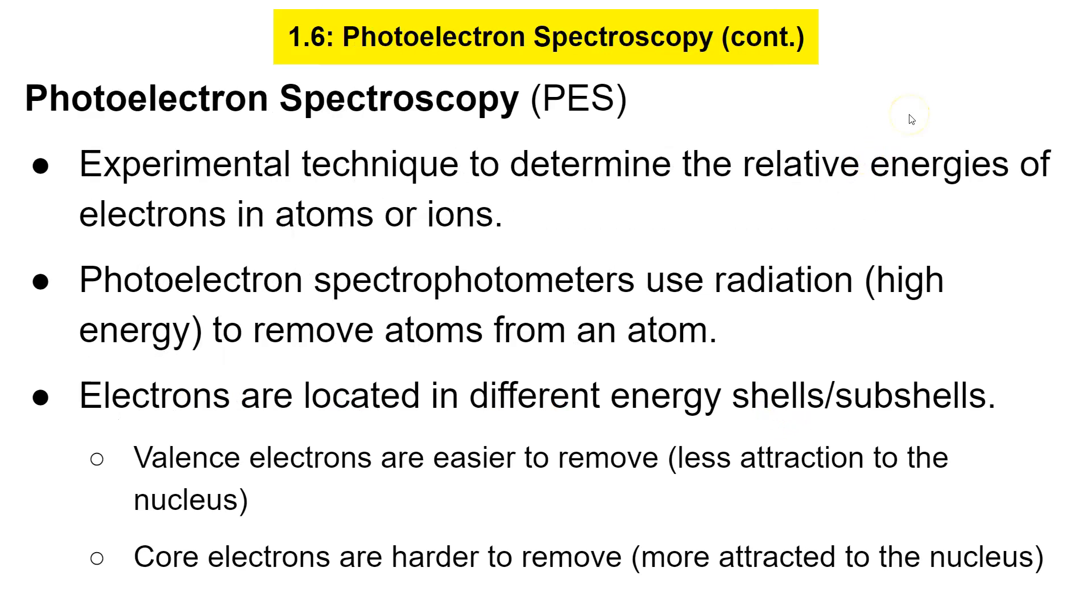All right, so photoelectron spectroscopy, PES for short, is an experimental technique to determine the relative energies of electrons in atoms or ions.